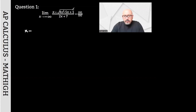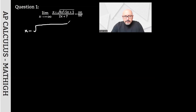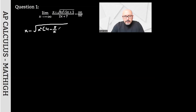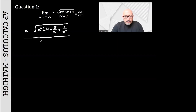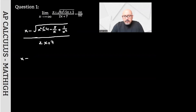I'm factoring out x squared from inside the square root. Inside the square root, I have a factor of x squared. I wrote it as 1 divided by x squared. When taking x squared out, one of the mistakes made is to directly accept it as x. Here, you definitely need to say the absolute value of x.